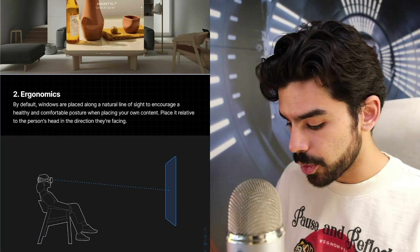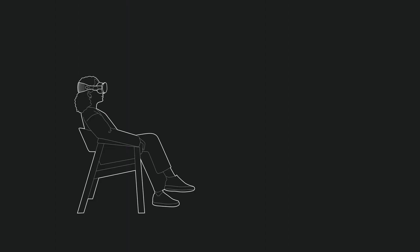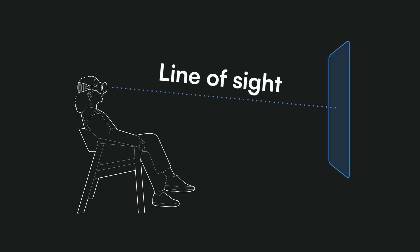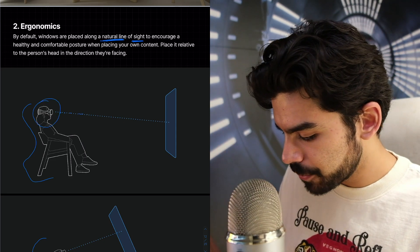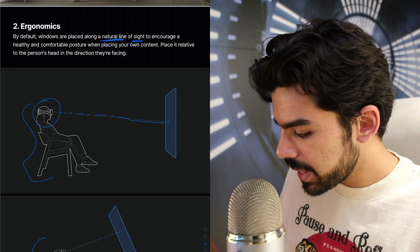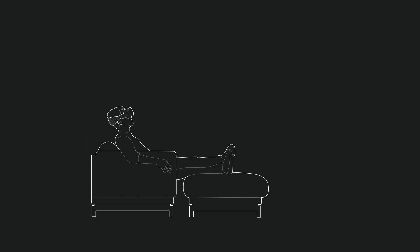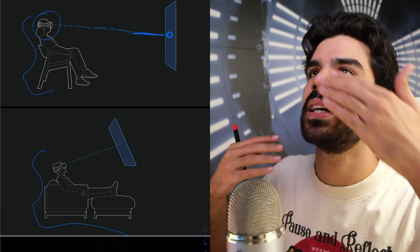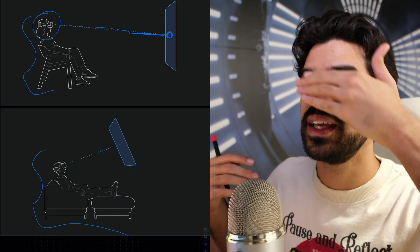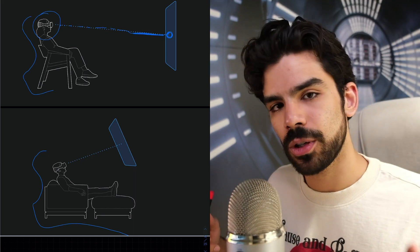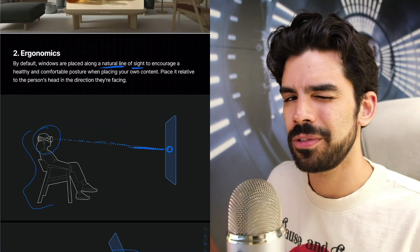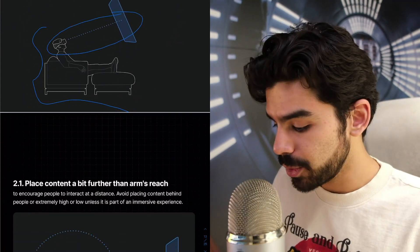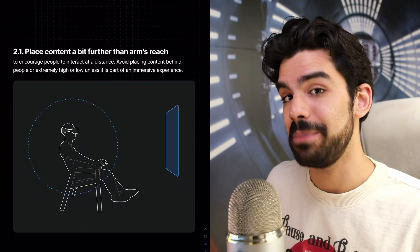The second component is ergonomics. When you open an app, the Vision Pro predicts your natural line of sight and places windows in alignment with it. If you're sitting upright, the center of your view is straight ahead. But if you're on a couch with your neck tilted back, you'd prefer content positioned accordingly. It's not necessary to place windows in the center of the room — it depends on your line of sight. As designers we sometimes forget these very basic things.